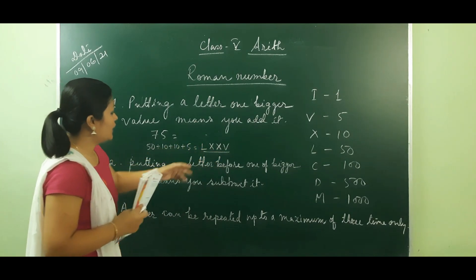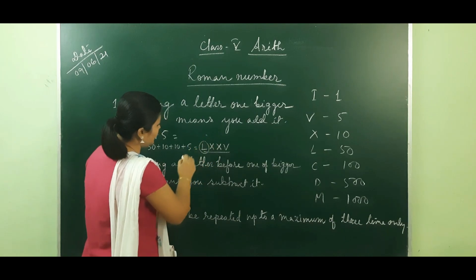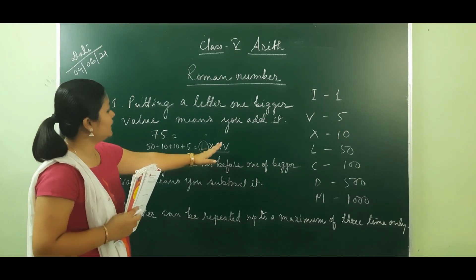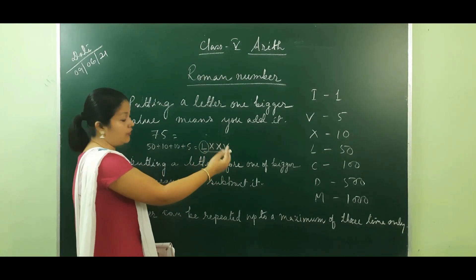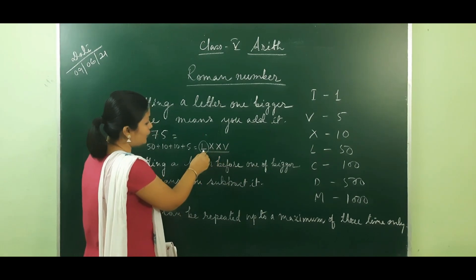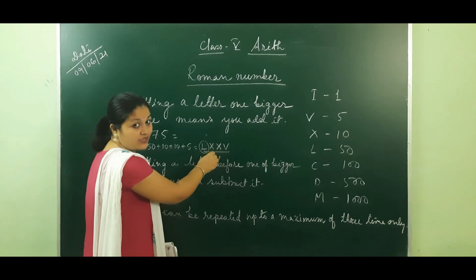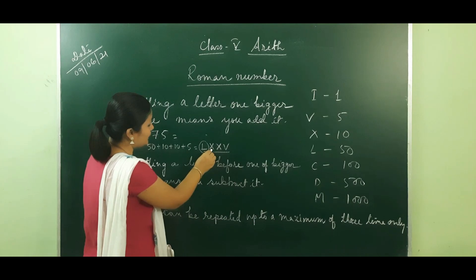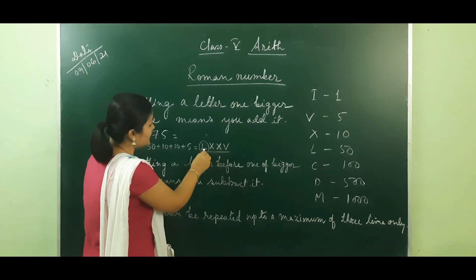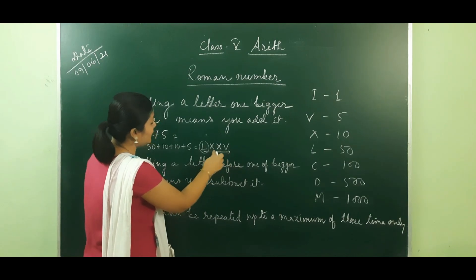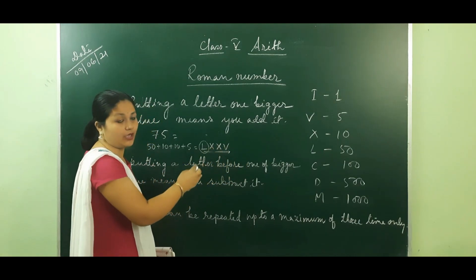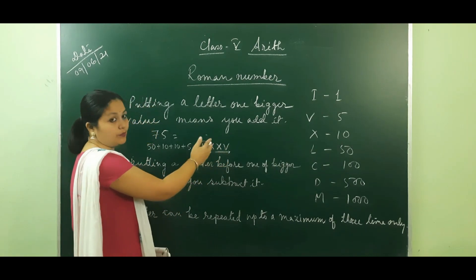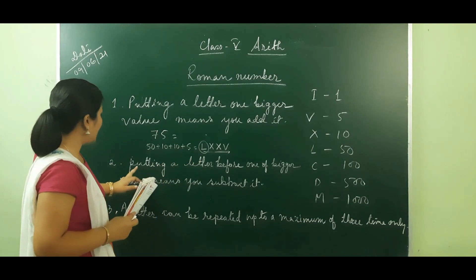So LXXV — L is 50, the bigger number. When you write a smaller letter to the right side of the larger one, it means addition. Here 10 is smaller than 50, and X is written to the right of L. This right side means addition of numbers. So when you write a smaller number after a bigger number, it means addition.